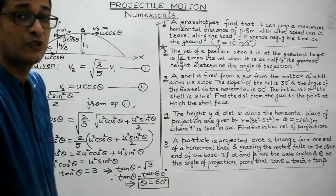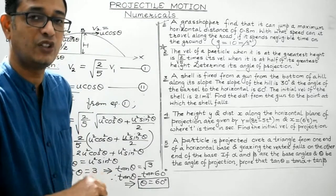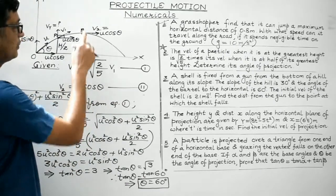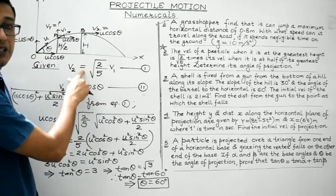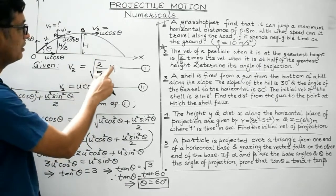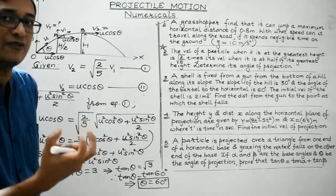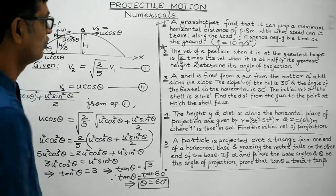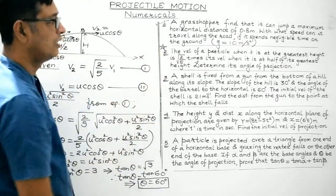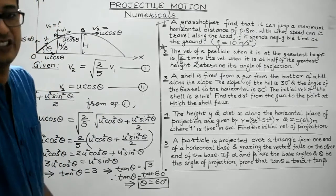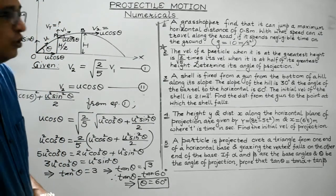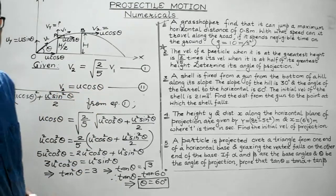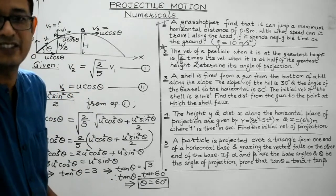So if the body is projected at an angle of 60° with the horizontal, the velocity at the highest point is √(2/5) times its velocity when it reaches half its maximum height. The answer is 60 degrees — that's the angle of projection. You need to make use of the basic facts and keep on solving; eventually you will arrive at the correct result.